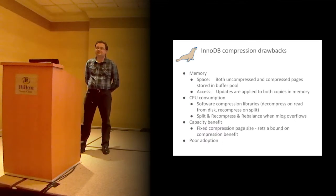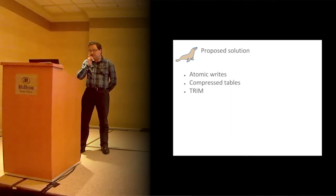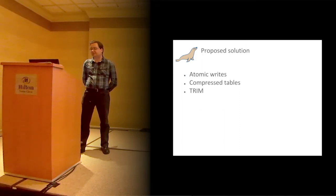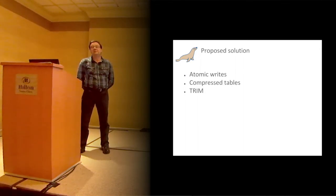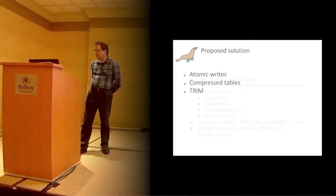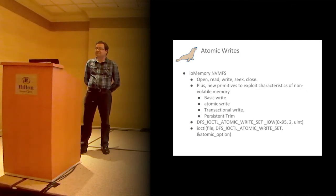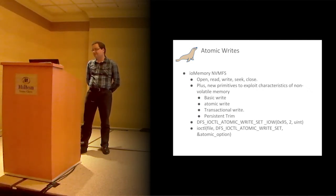What we have now implemented and are proposing here is that we try to solve both of those problems at the same time, using three implementation methods. We are using so-called atomic writes, we do compression differently, and we use a so-called TRIM operation. For atomic writes we need some help from the device. IOMemory, a non-volatile memory file system, gives us new primitives which we can use for this. There are different write operators: basic writes, atomic writes, transactional writes, and trim.